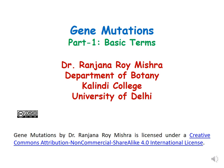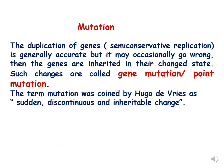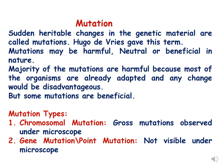In this lecture we will be discussing some basic terms of gene mutations. The duplication of genes during semi-conservative replication is generally accurate but sometimes it goes wrong and the genes are inherited in their mutated or changed state. Such changes are called gene mutations or point mutations. The term mutation was coined by Hugo de Vries as sudden, discontinuous and inheritable change — defined as sudden heritable changes in the genetic material.